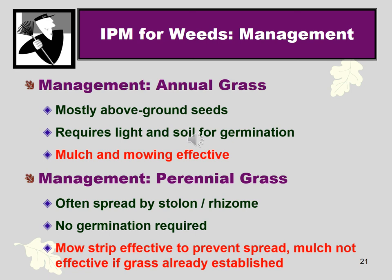A little more information on how those life cycles affect your management. Annual grasses and other annuals mostly have above-ground seeds and require light and soil for germination, so mulching and mowing can effectively reduce annual weeds. Perennials spread by stolons or rhizomes — underground portions — so they don't need germination or light for spreading. You need to mechanically or structurally prevent them from spreading, such as with a mowing strip, board, or edging that keeps them from growing into other areas.